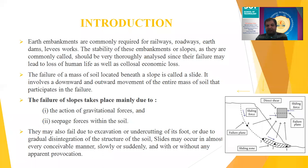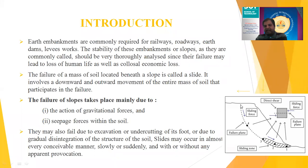Slides may occur in almost every conceivable manner, slowly or suddenly, with or without apparent provocation. Looking at this figure, this is a particular slope assumed to fail along a sliding plane. From this sliding zone, there is the unsupported mass where the slope is going to fail, and this is the stable mass. At their interaction, shear stresses and shear strength are generated, which form the basis for finding slope stability.